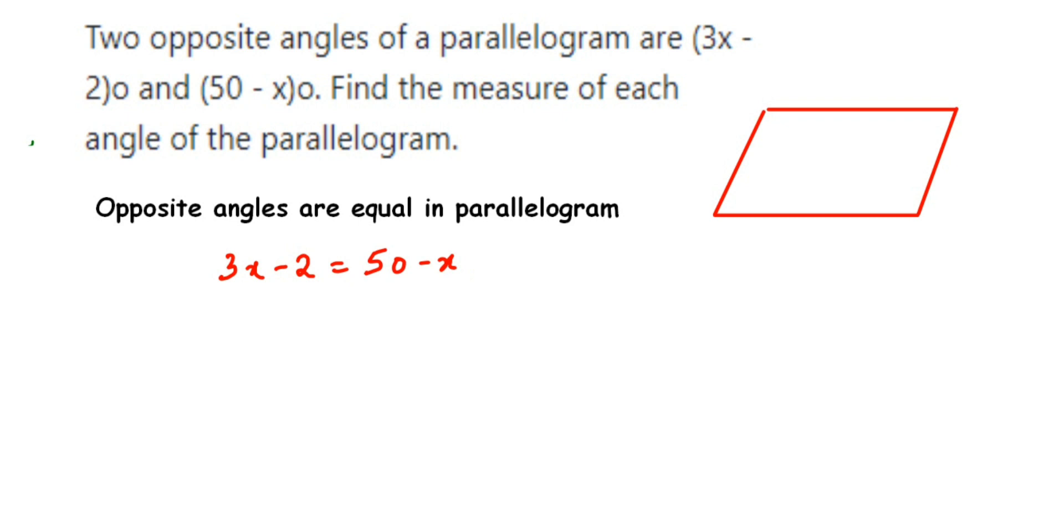When -x comes to the other side, it becomes addition, so 3x + x. Similarly, -2 becomes +2, so 50 + 2. This gives us 4x = 52.